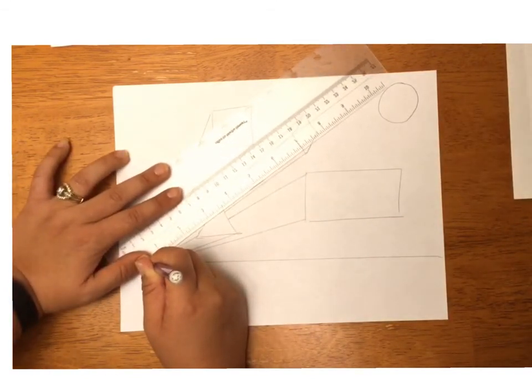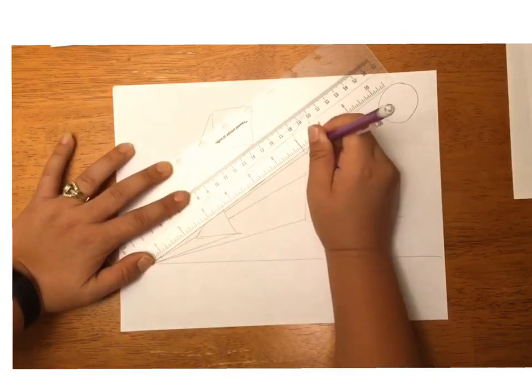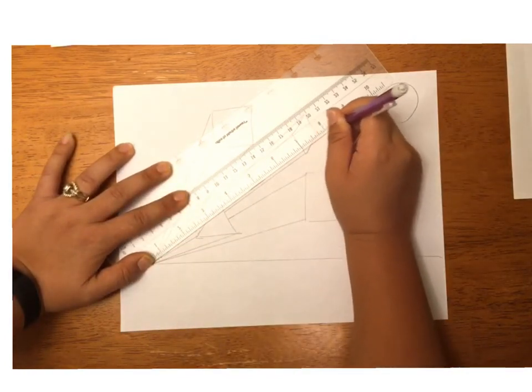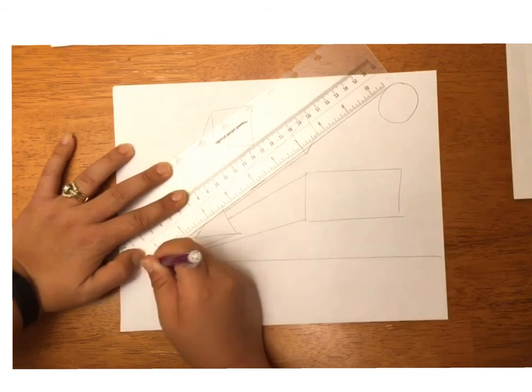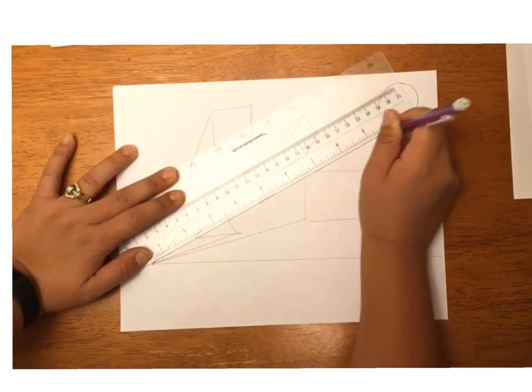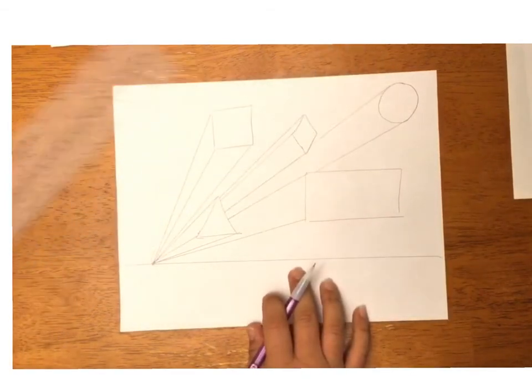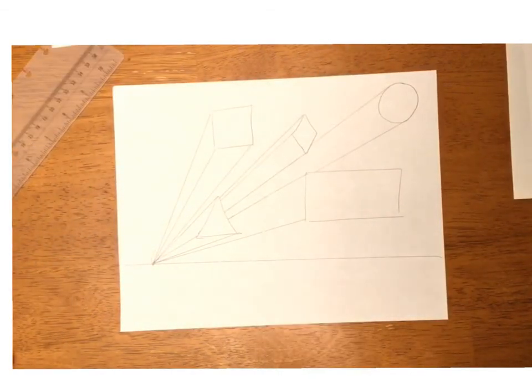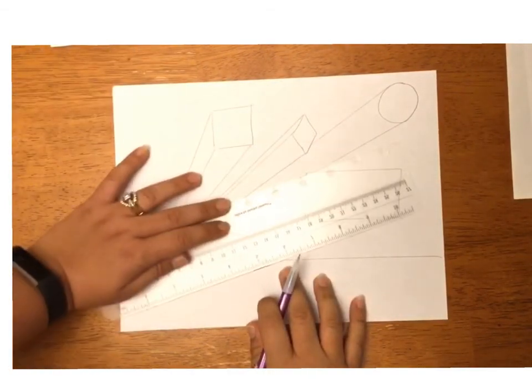Now my circle is actually behind not only the triangle but also the rhombus and this rectangle. Whenever you're doing this extra one-point perspective exercise, you've got to make sure that you know which shapes you would like in the front and which shapes you would like behind.